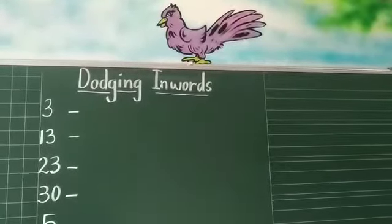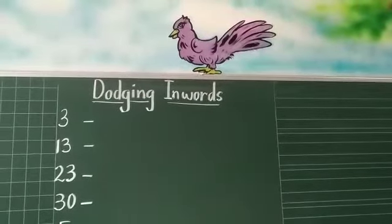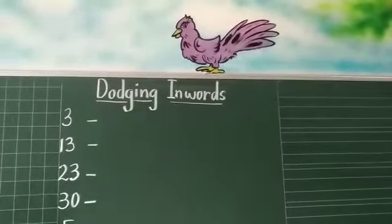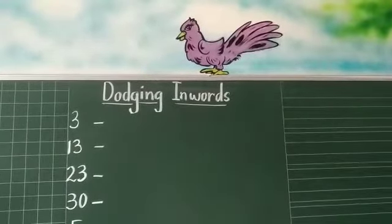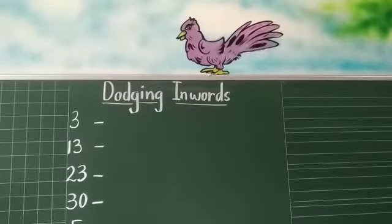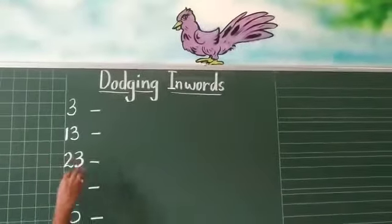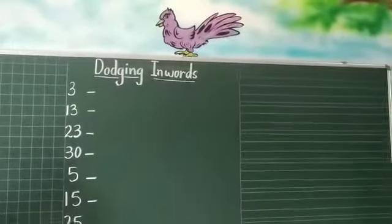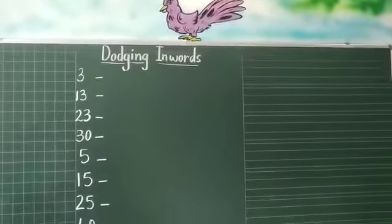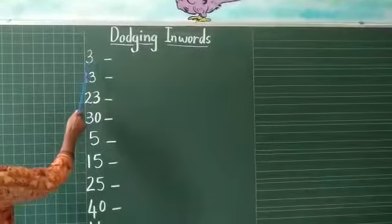Hi children, welcome to maths class. Today we are going to learn dodging in words. Dodging in words means numbers which are given randomly. See how I have written?